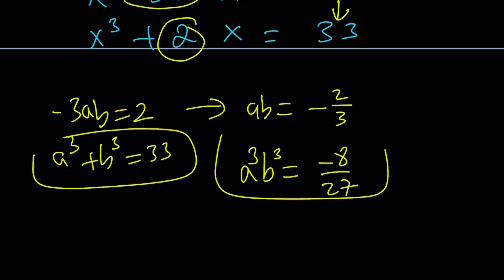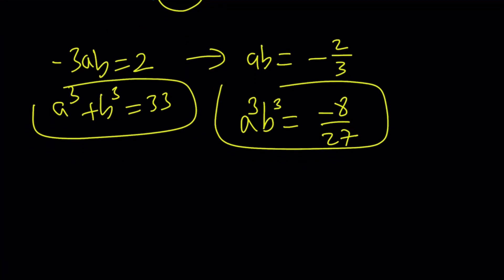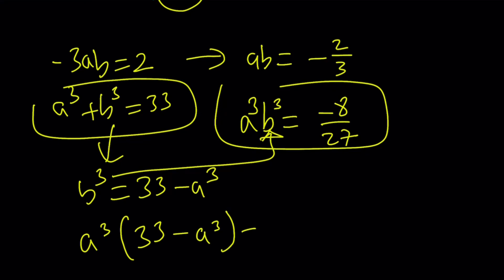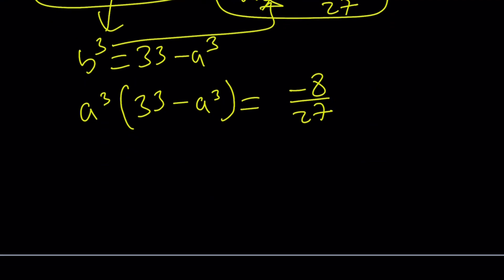I got this, and I got that, so I can solve it as a quadratic system. Because I can replace b³ with 33 minus a³. Then, I can go ahead and plug that in here. That's going to give me a³ times (33 - a³) equals negative 8 over 27. Let's go ahead and distribute: 33a³ - a⁶ equals negative 8 over 27. And then, if you call a³ equals c,